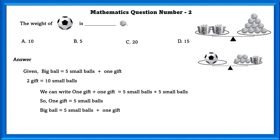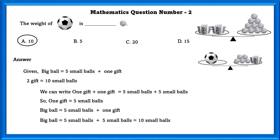So big ball equals 5 small balls plus 1 gift. Substituting the value of 1 gift, we get big ball equals 10 small balls.